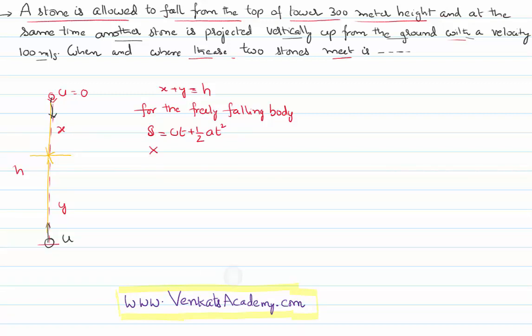As per our notation it is falling a distance x, it has no initial velocity, it is falling under the gravity plus g because the velocity is increasing. So the formula for x is half gt square, that's for the freely falling body.